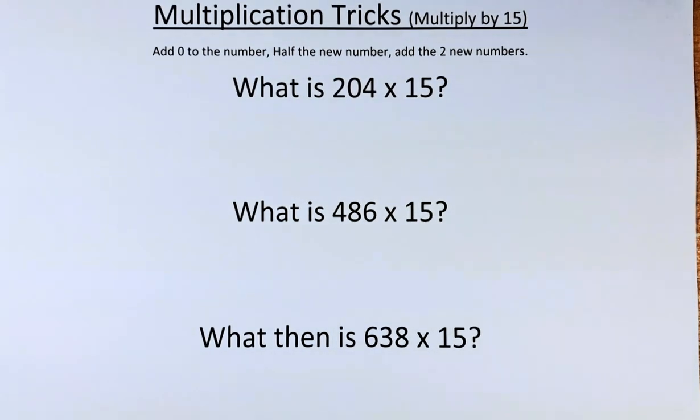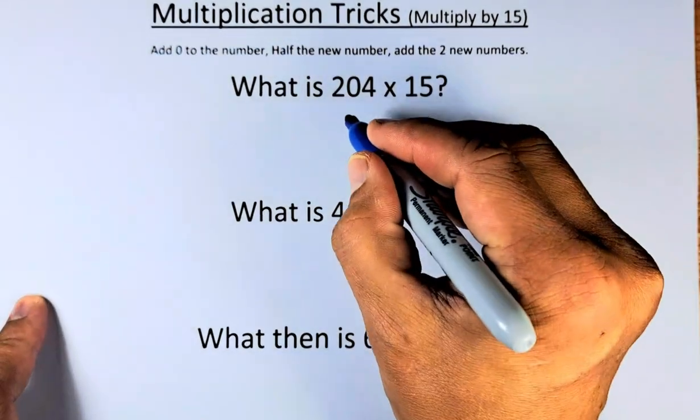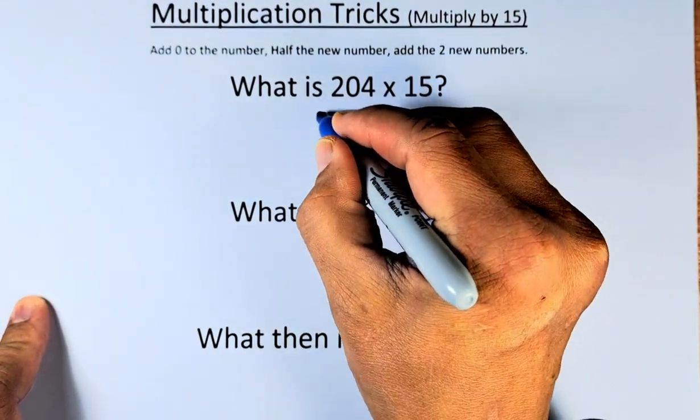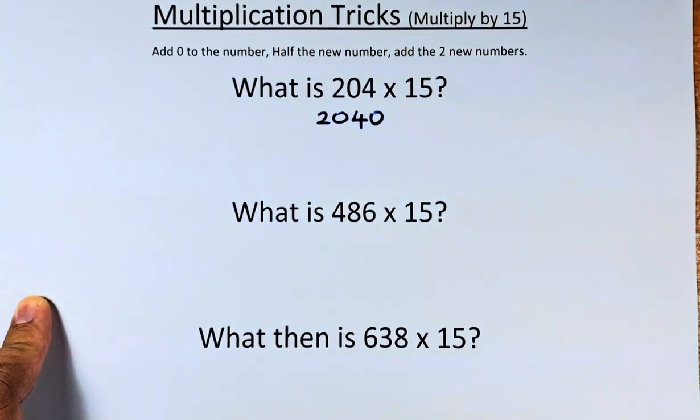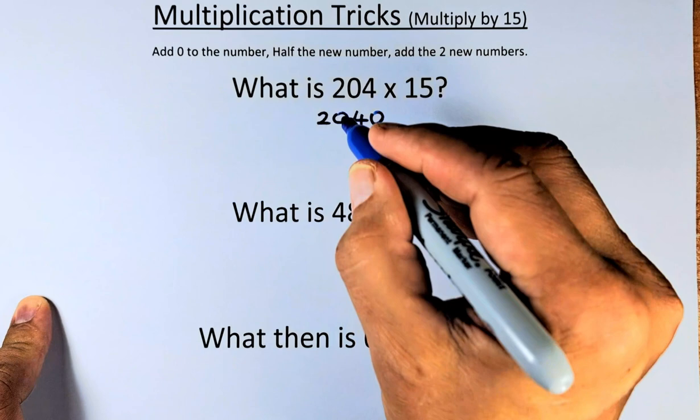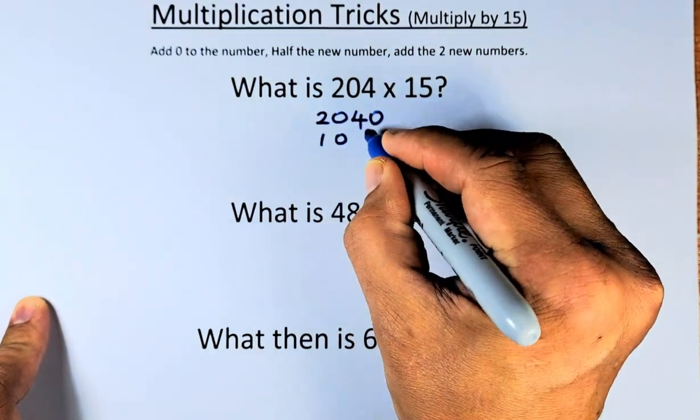So what is 204 times 15? We're going to add 0 to 204, it becomes 2040. Then we're going to half 2040, which is 1020.